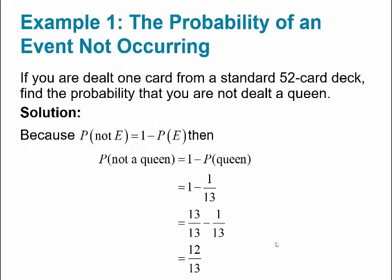Let's do an example. Suppose you are dealt one card from a standard deck of 52 cards. What is the probability that you are not dealt a queen? Well, there are 4 queens in the deck, so the probability of being dealt a queen is 4 divided by 52, which is 1 out of 13. So the probability of not a queen equals 1 minus 1/13. With a common denominator, that's 13/13 minus 1/13, which equals 12 out of 13.